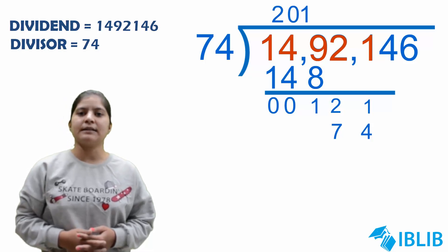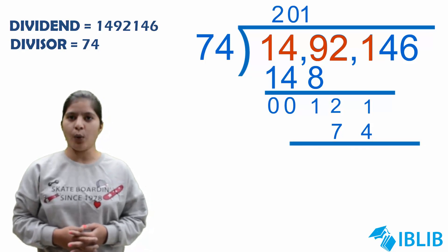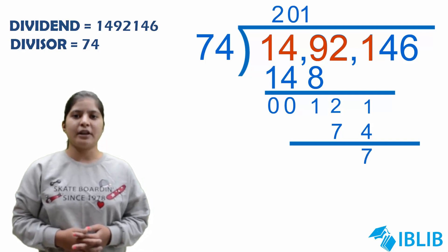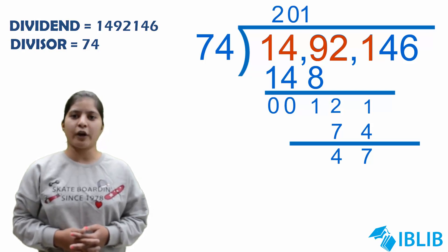We will write 1 at the place of quotient and 74 below 121. Now, again we will subtract these numbers. 11 minus 4 will give us 7. Now, 11 minus 7 will give us 4. In remainder we are having 47.